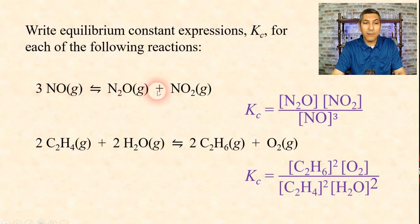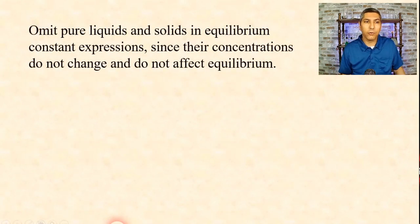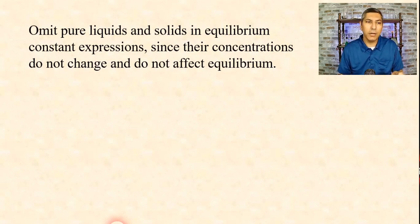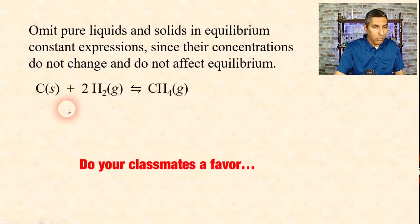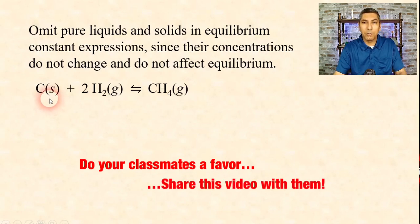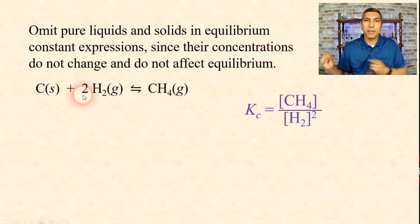In these equations, notice we have all gases. Sometimes we're going to have reactions with solids and liquids. The rule is to omit pure solids and liquids from equilibrium constant expressions because their concentrations don't really change and they don't affect equilibrium. So if we have this equation with a solid, we leave out that solid. Our equilibrium constant expression is Kc equals [CH4] all over [H2] squared — we leave out the carbon because it's a solid.